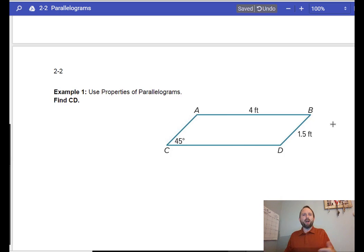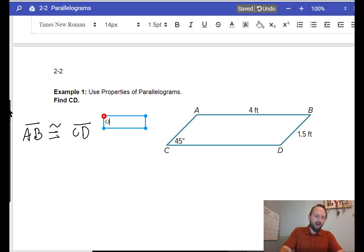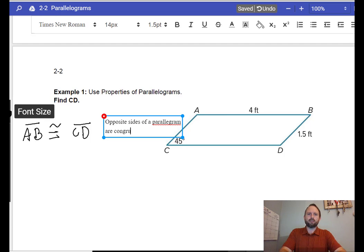So, let's use the properties of parallelograms to solve this. Example one. Find CD. All right. Well, you might just be like, hey, it's four feet because that's equal to that. But, we can say AB is congruent to CD. How do we know that? All right. So, we know that from opposite sides of a parallelogram are congruent.